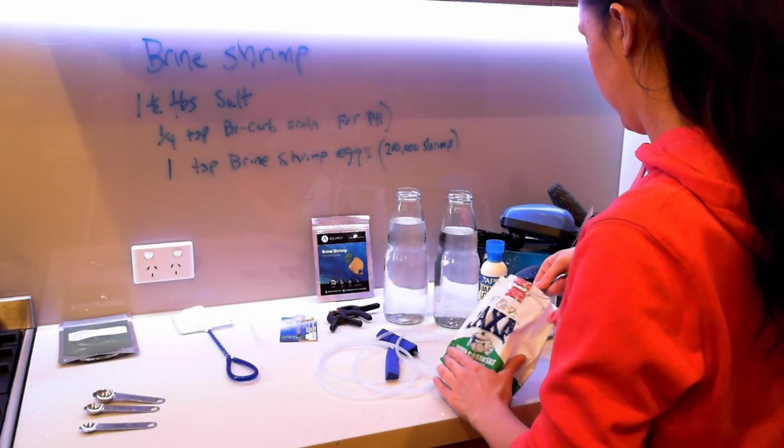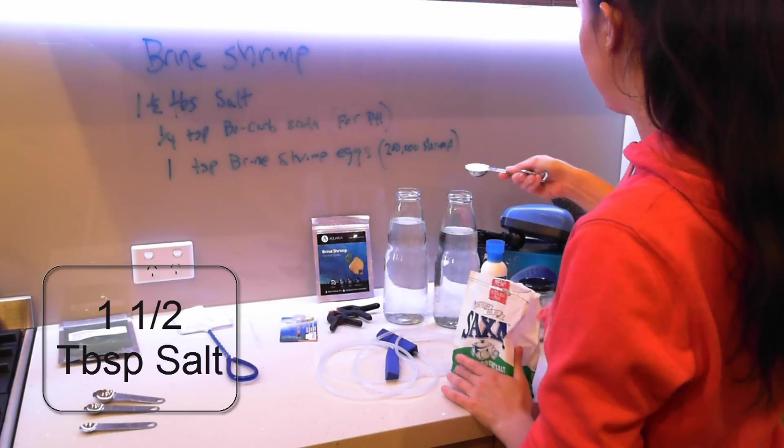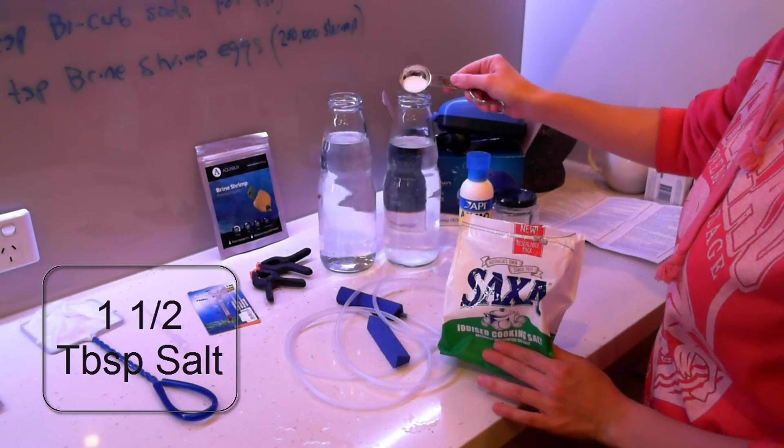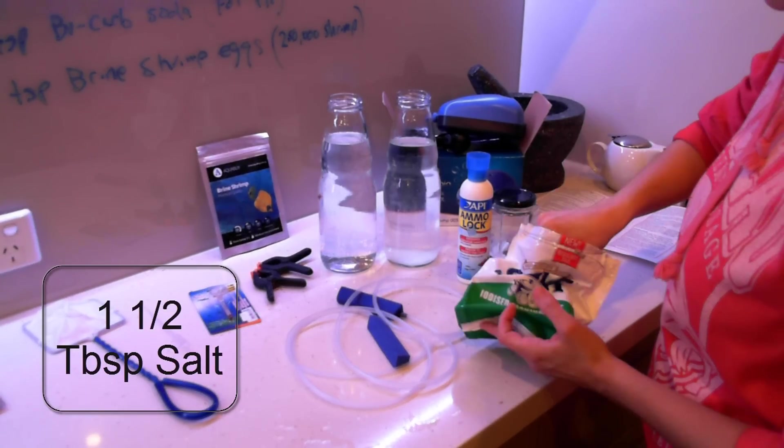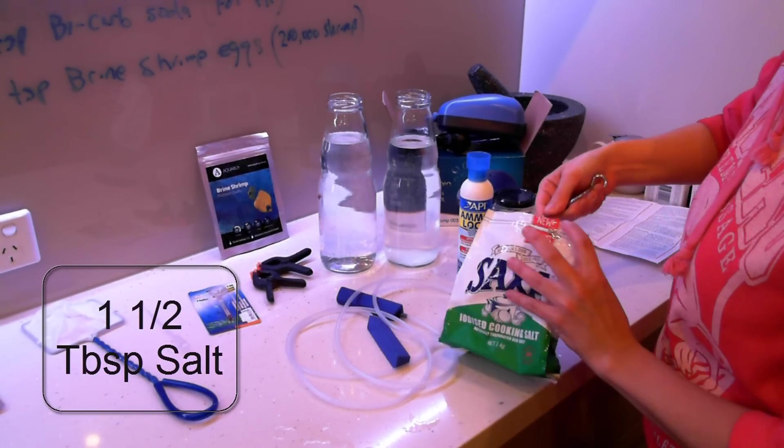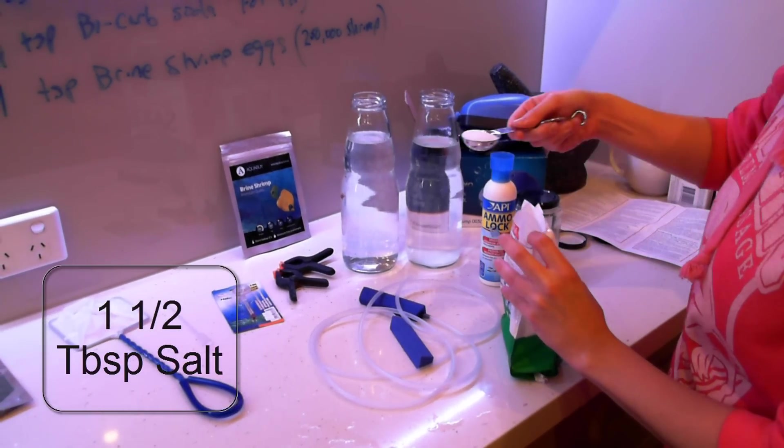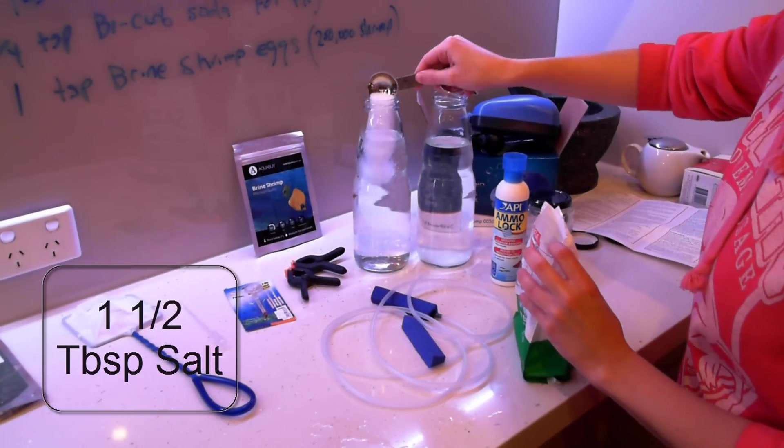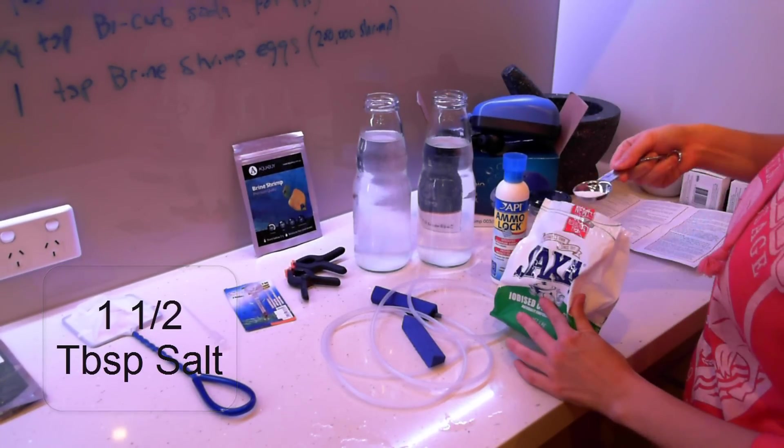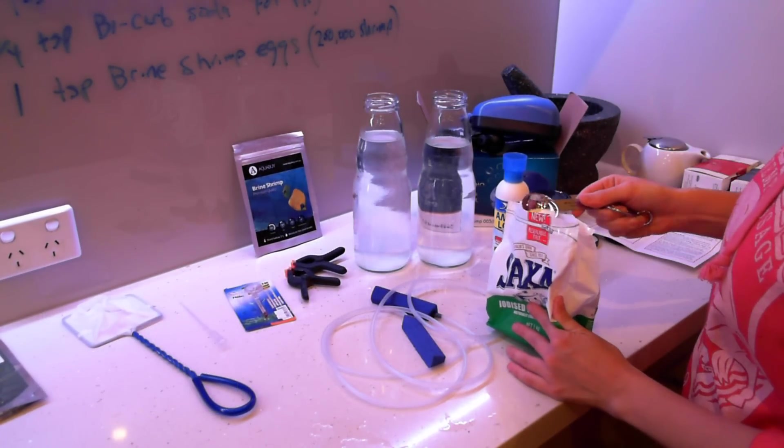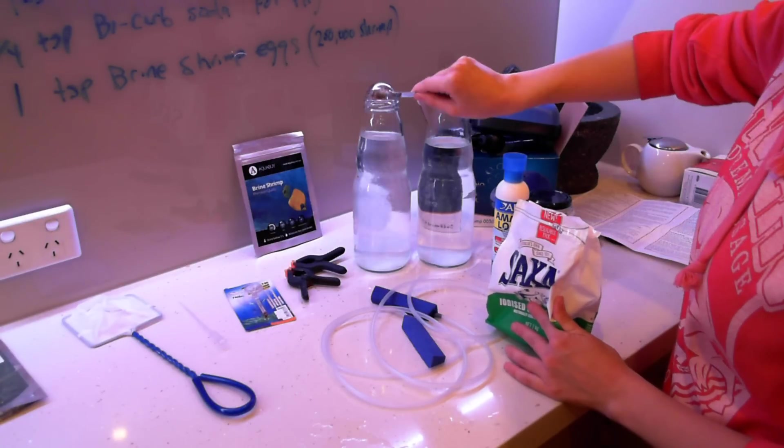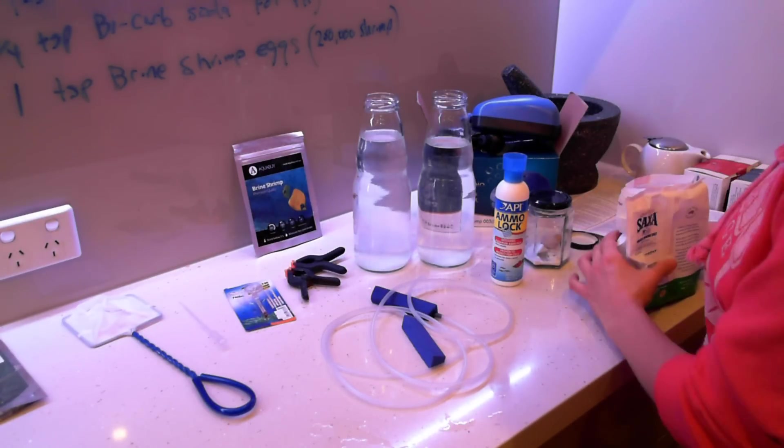We're just going to start by adding our salt. We're putting one and a half tablespoons per liter container. It's really important to get the right amount of salt. More is better than less. These brine eggs, they need to be in a salty environment. A little bit extra salt is fine if you accidentally tip a bit more in there.